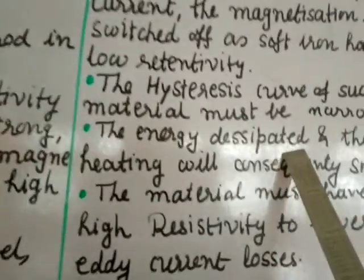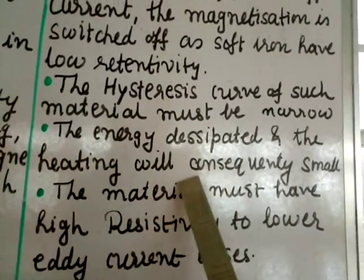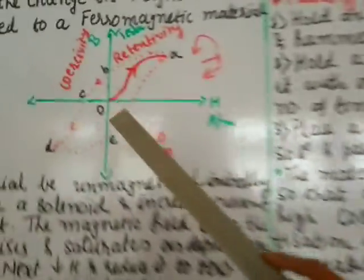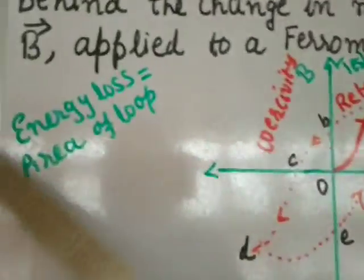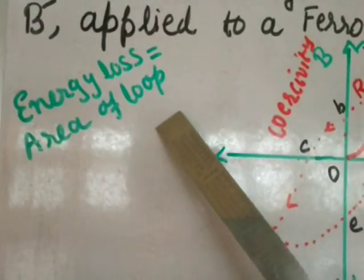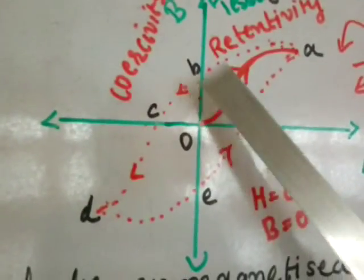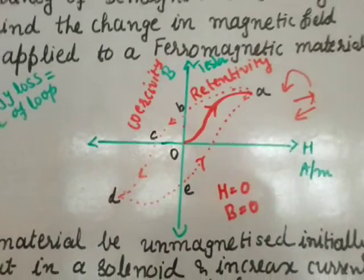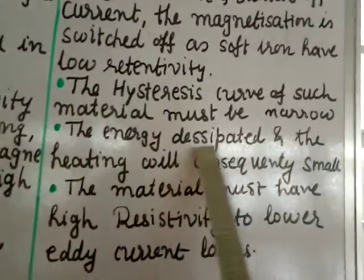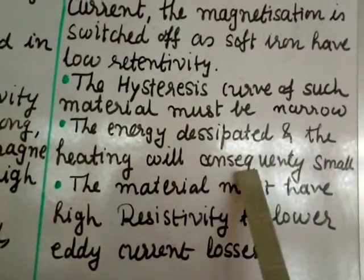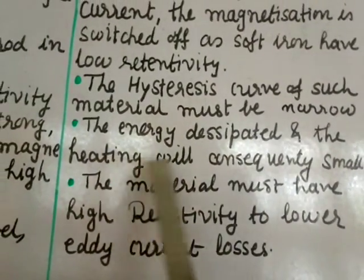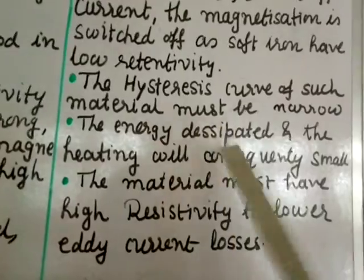The energy dissipated and the heating will consequently be small. If the hysteresis curve is narrow, if this part is narrow, then we know that energy loss gives you the area of the loop. So if this is less, that means energy loss is less. Energy loss is less means the heating effect also will be less. So the energy dissipated and the heating will consequently be small. Energy loss will be less and it will not be heated up fast.